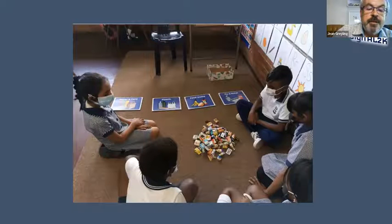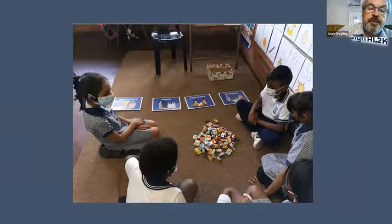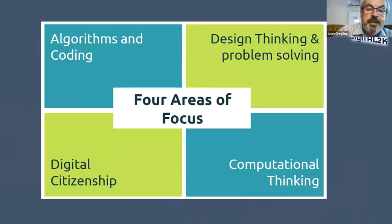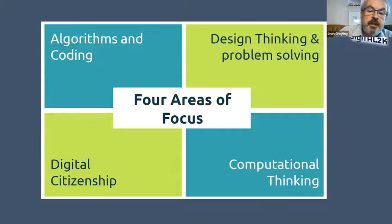One of the other lessons has kids work out a little algorithm to sort rubbish as plastic, food waste, or tin and metal — a very hands-on, practical way to think in terms of algorithms, abstraction, and problem solving. We realize that coding is not just algorithms; it's design thinking, digital citizenship, and computational thinking, and we're now developing 40 lessons that will cover all four of these topics.